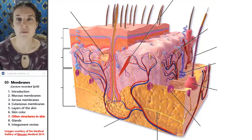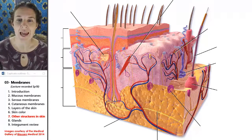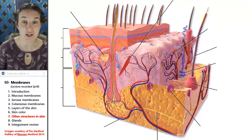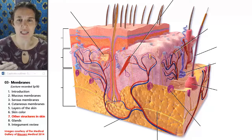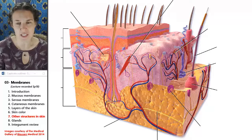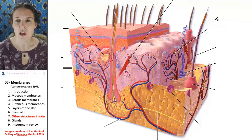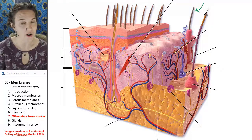This is the bells and whistles, the hair accessories section of the lecture, because there are a lot of other things. We've got our layers of skin and tissues, but there are a lot of other things associated with skin. The most obvious thing associated with skin is hair.